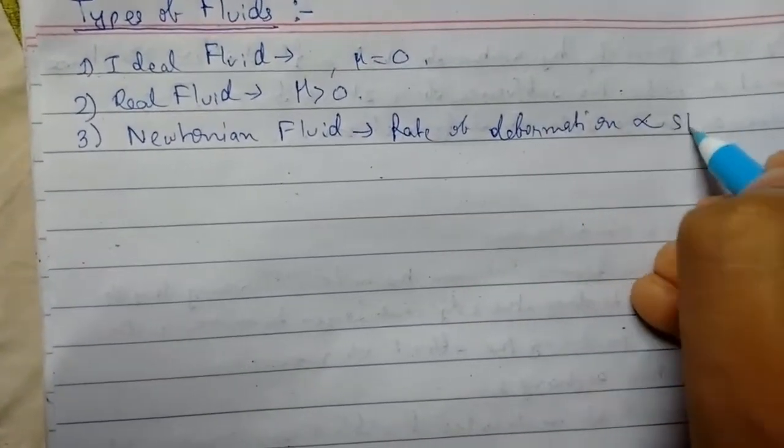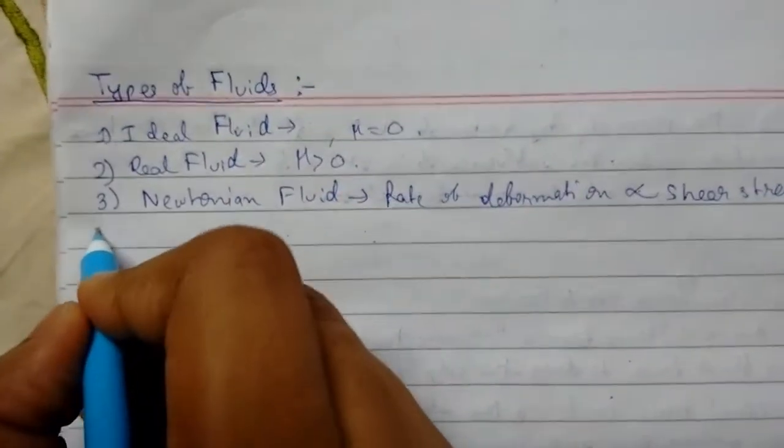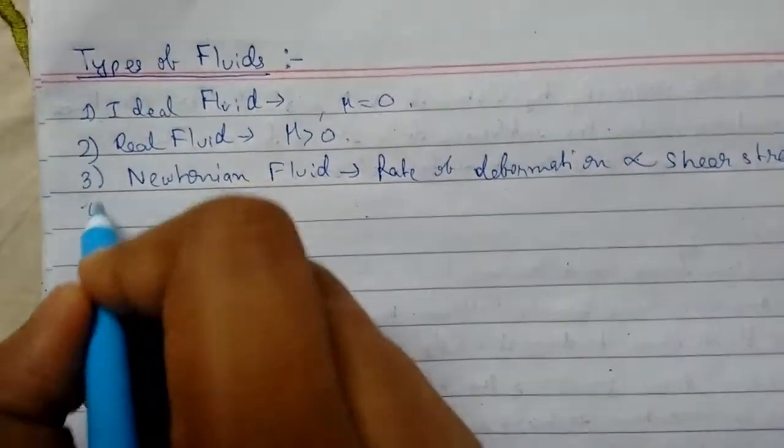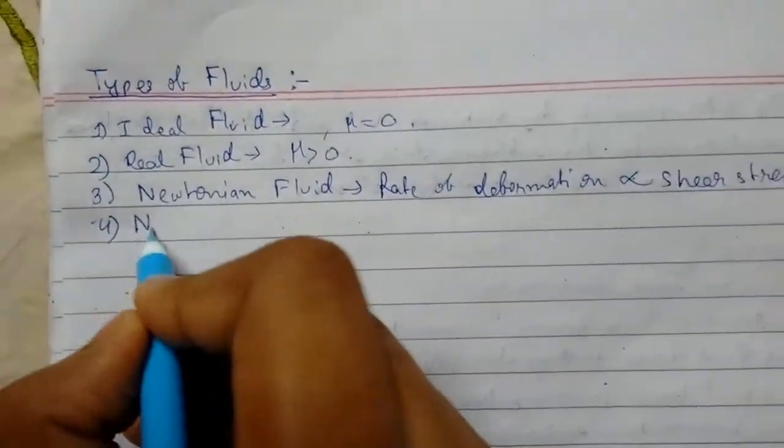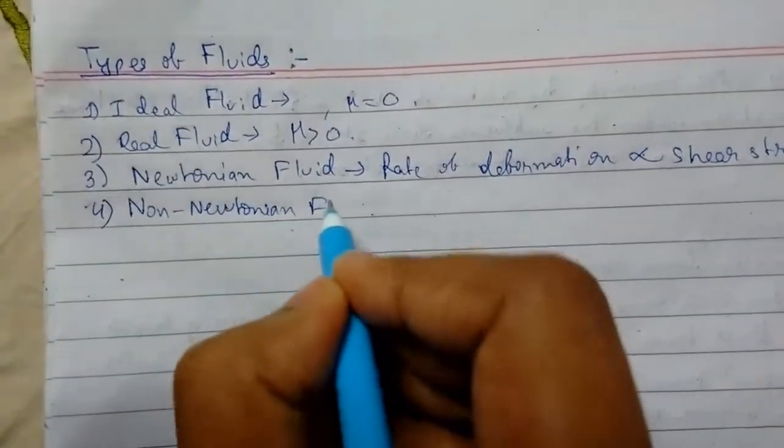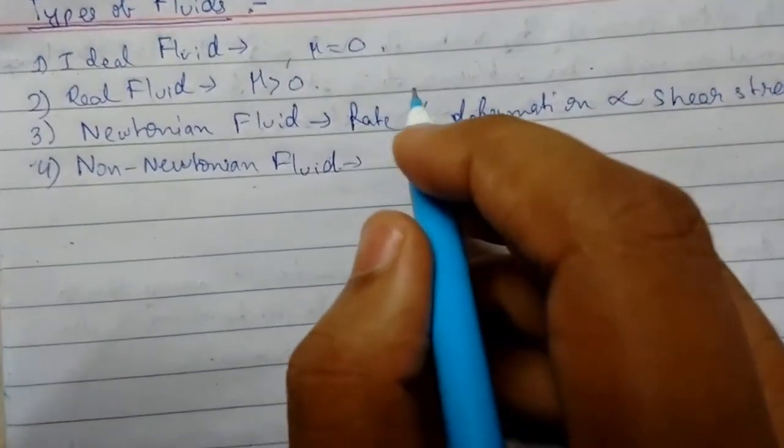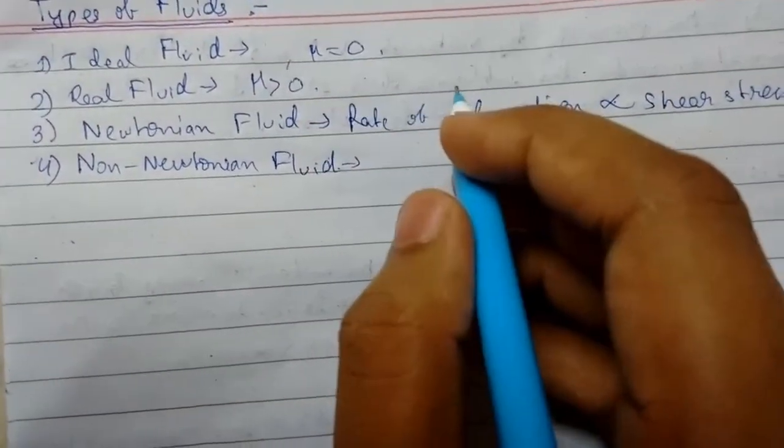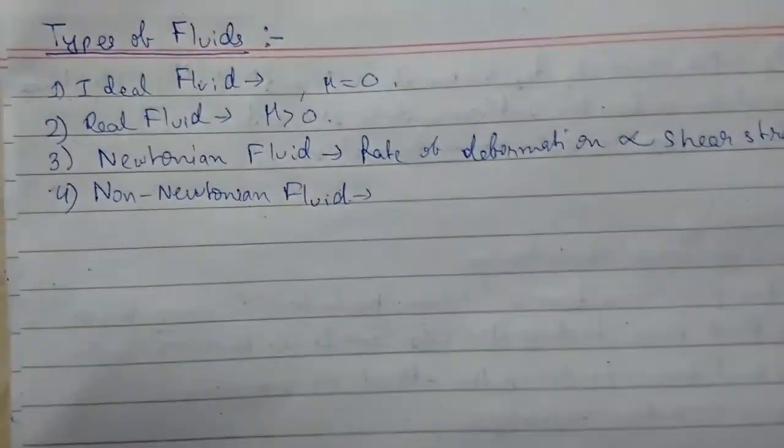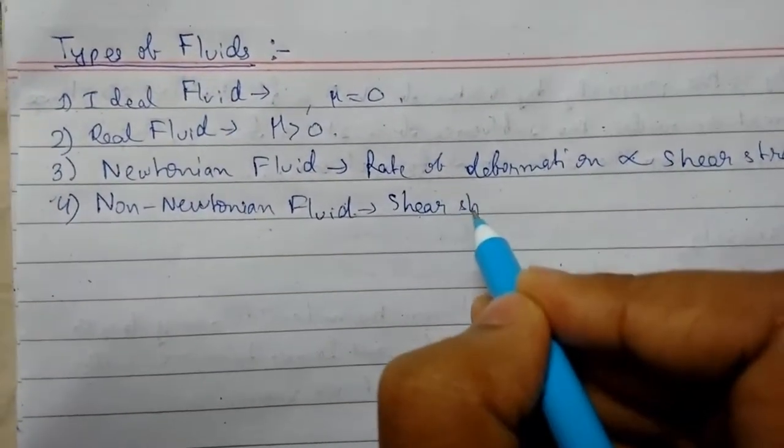Example is air, water, gasoline. Number four: non-Newtonian fluids. So there are certain fluids which exhibit non-Newtonian characteristics, that is, the stress is not linearly dependent upon the velocity gradient. That is, the rate of deformation is directly not proportional to the shear stress.